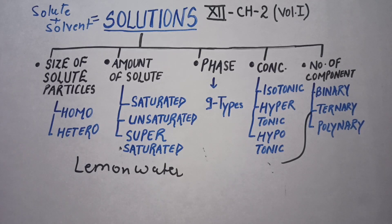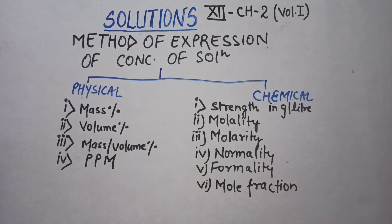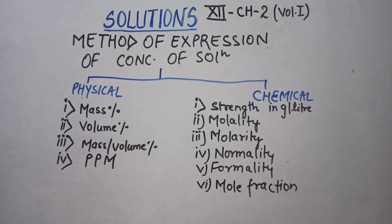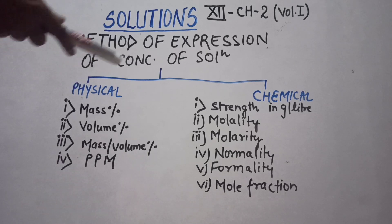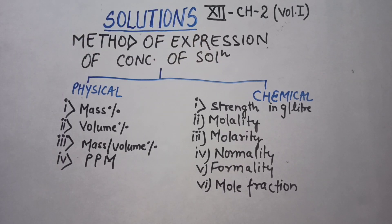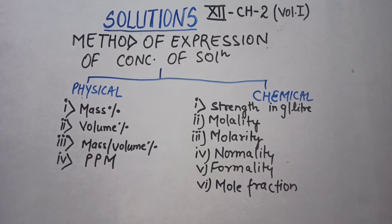Now our main chapter is the methods of expression of concentration of solution. Concentration means the amount of solute present in your solvent. We can classify this into two major categories: physical and chemical basis. Under physical basis, we majorly have four categories: mass percentage, volume percentage, mass by volume percentage, and PPM.